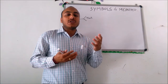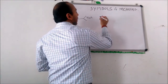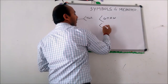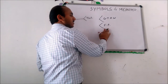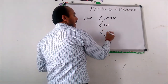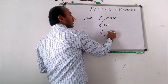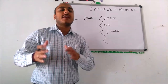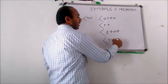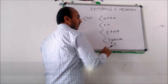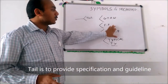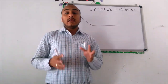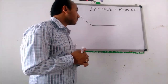The tail of the weld symbol is for conveying some information to the welder or manufacturer. If we want the weld to be done by GTAW, we mention the process in the tail. If we want full penetration weld, we can mention that. We can also specify a particular electrode, such as E7018. Even if we want welding done typically all over the structure, we can mention it as a typical weld or specify pitch at certain intervals. The tail conveys notes and specifications to the welder.